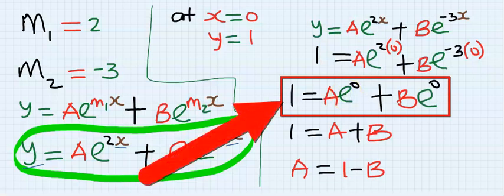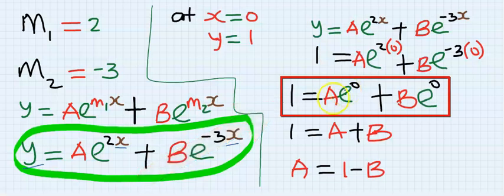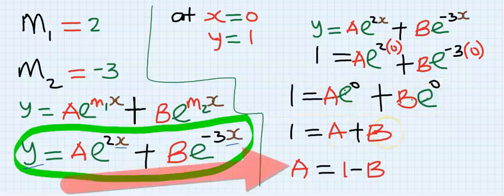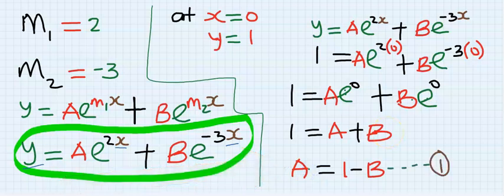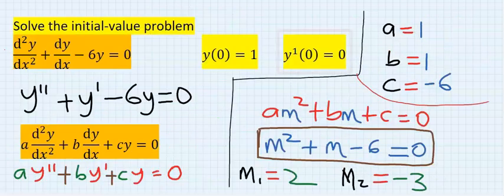Anything to the power of zero is one. Hence, one times a is a and one times b is b. Here, I'm going to make a the subject's formula. And I will call it equation one.